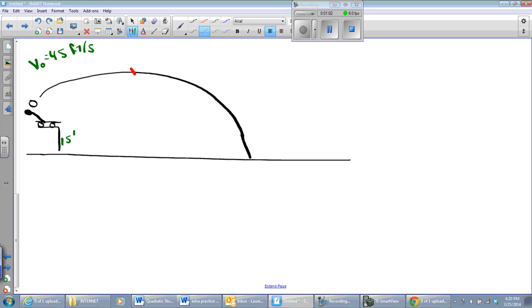And here's my catapult. And there's my ball. And my ball's going to go something like that. It's going to follow a parabolic trajectory or a parabolic path. Now, some things I'm going to point out. First of all, this is 15 feet off the ground. Initial velocity is 45 feet per second.